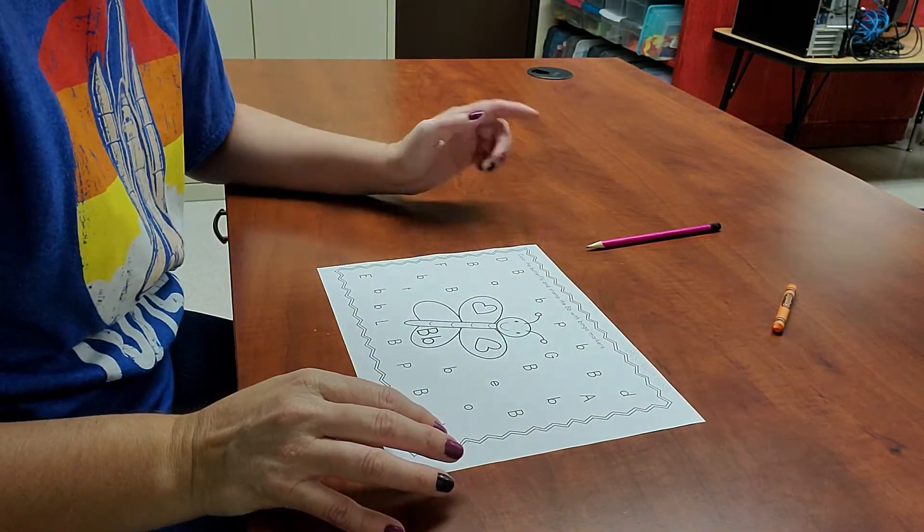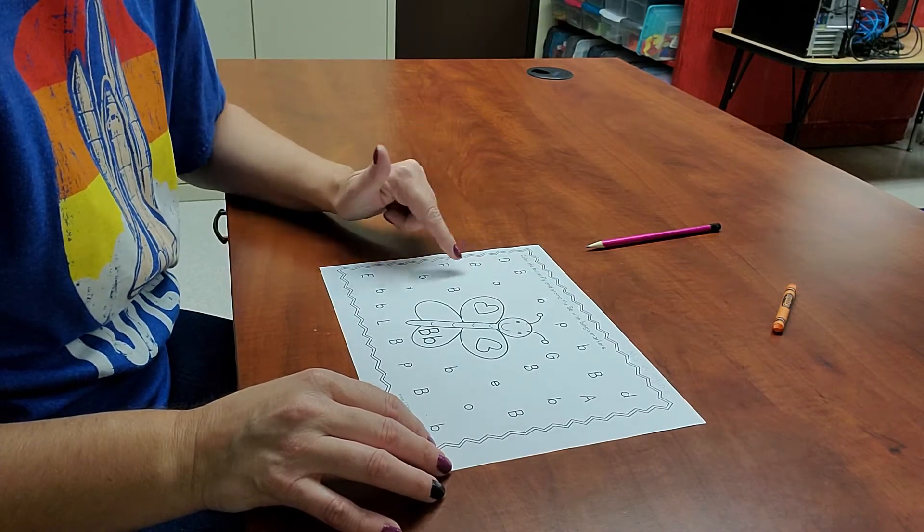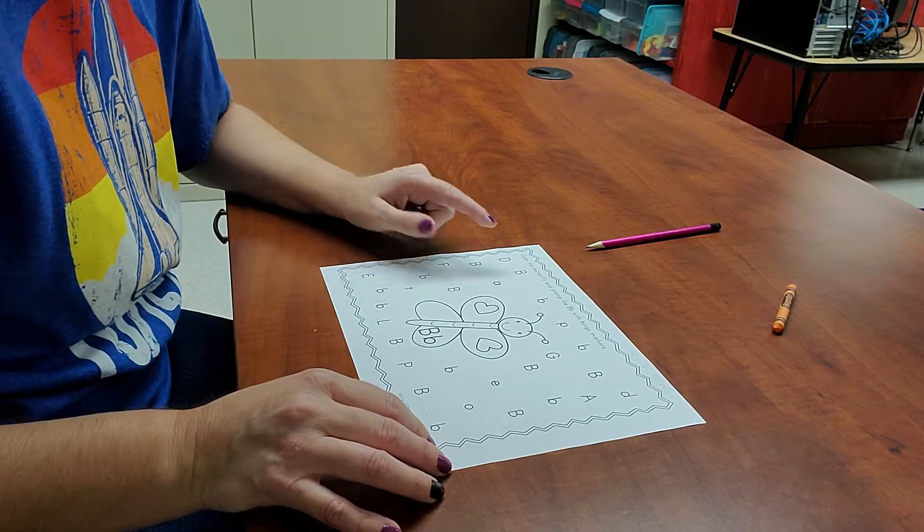And now we're just going to use our pencil and we're going to circle all of the big and little Bs.